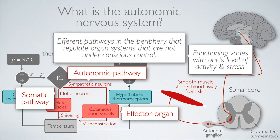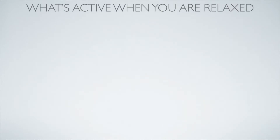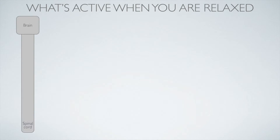Let's first consider what happens when you're relaxed — just sitting there, maybe listening to a not-too-exciting lecture. There are a variety of bodily functions that are more active in that situation than when you're moving around or stressed out. Although I said autonomic pathways are in the periphery, the cell bodies of their neurons actually reside in the spinal cord, which is part of the CNS. But because they project out into the periphery, that pathway is technically part of the periphery and constitutes an autonomic pathway.